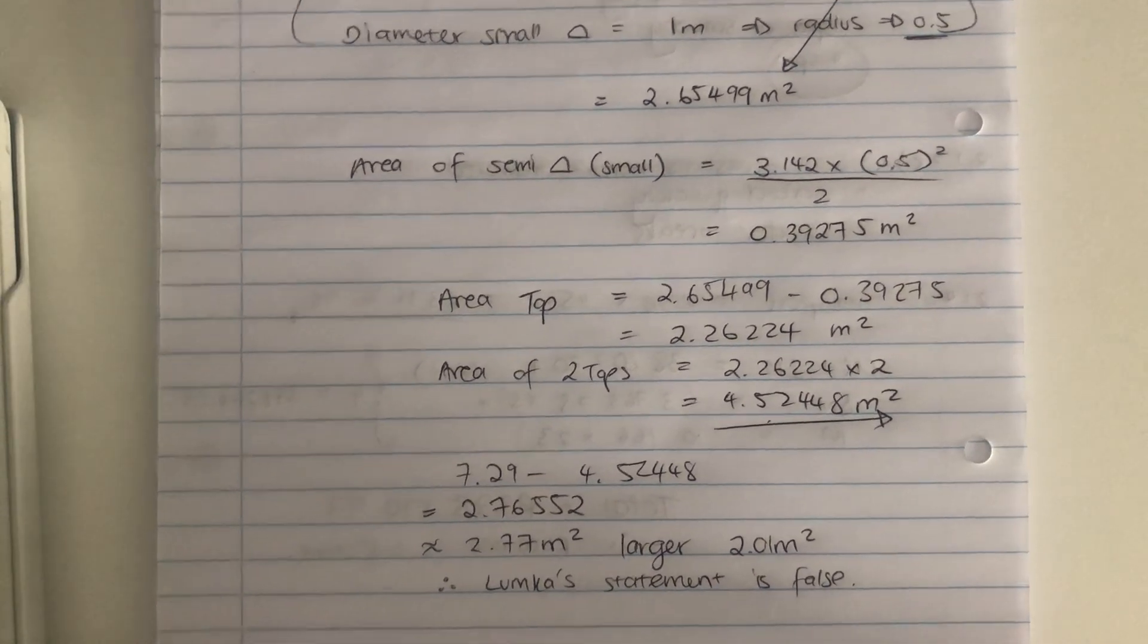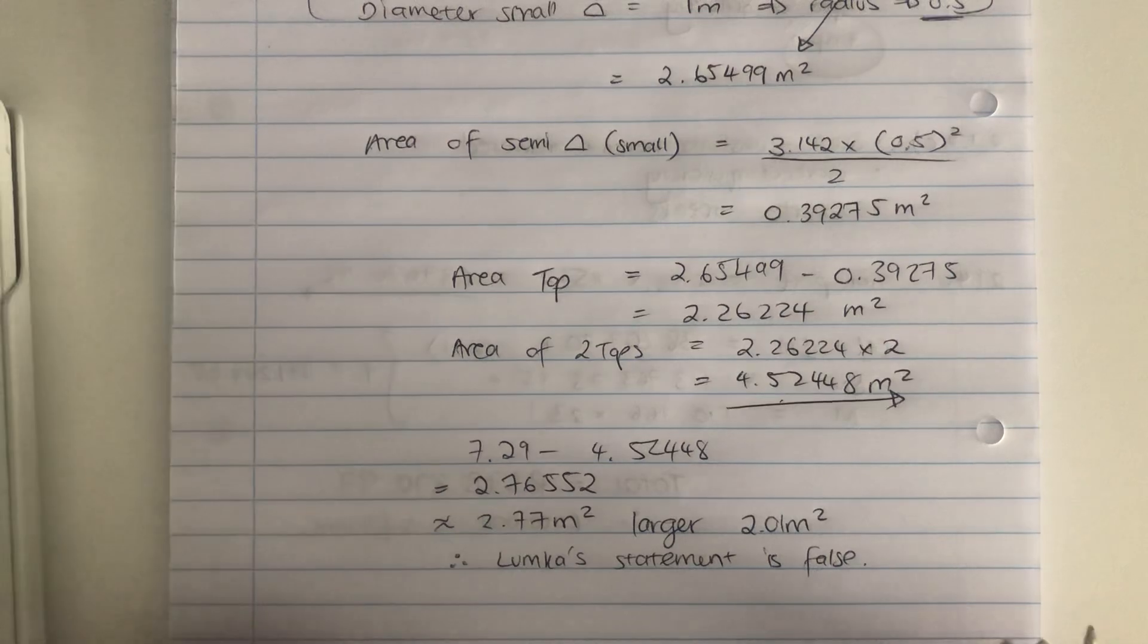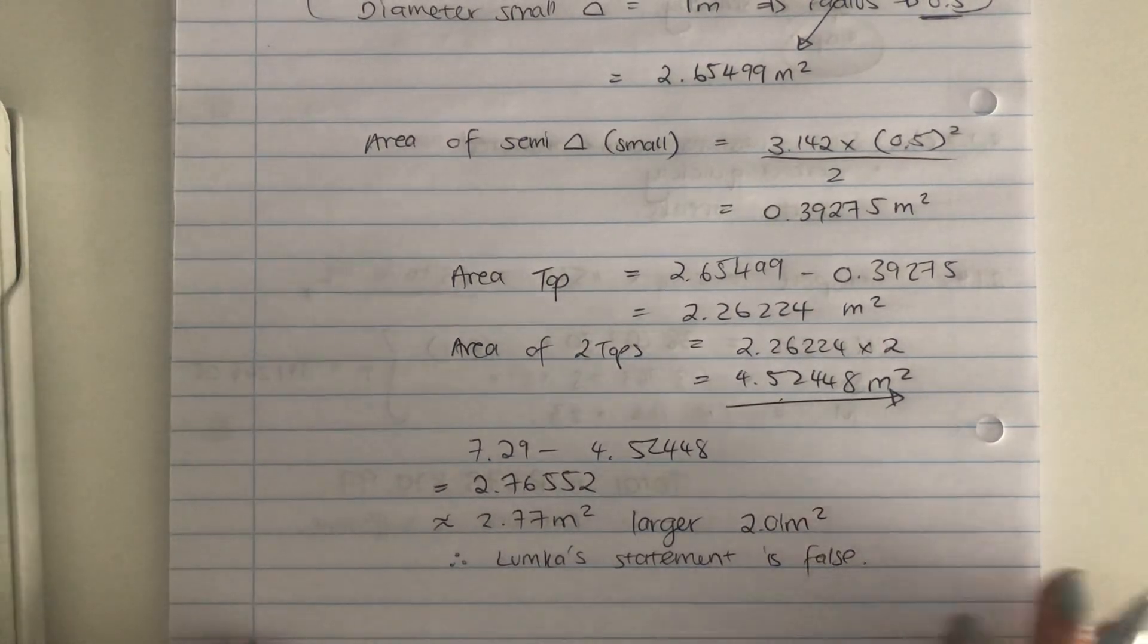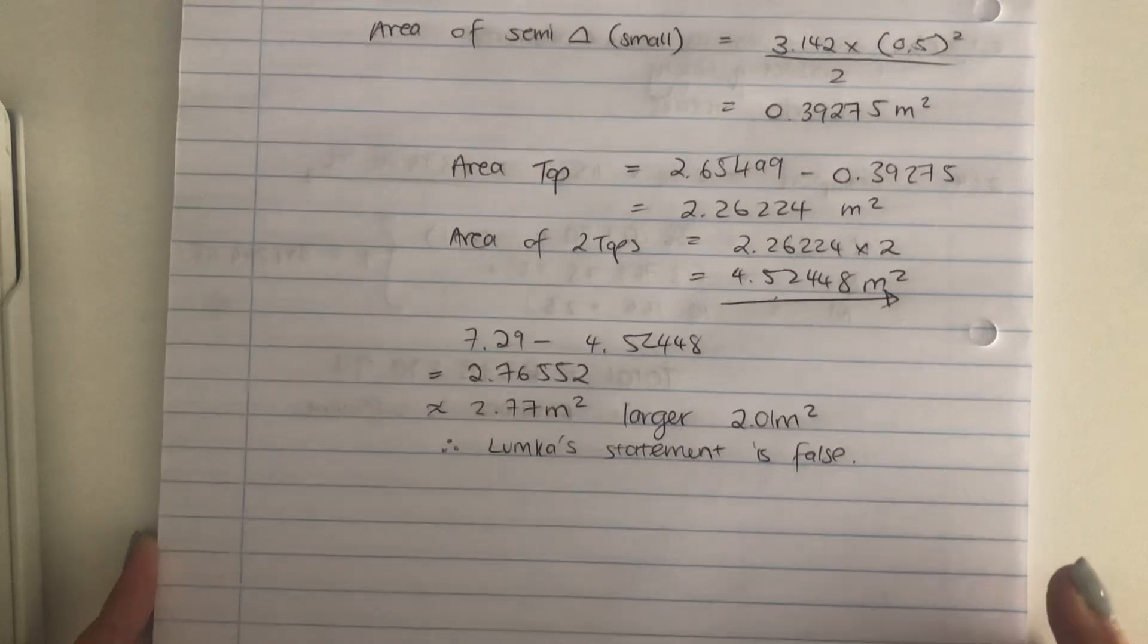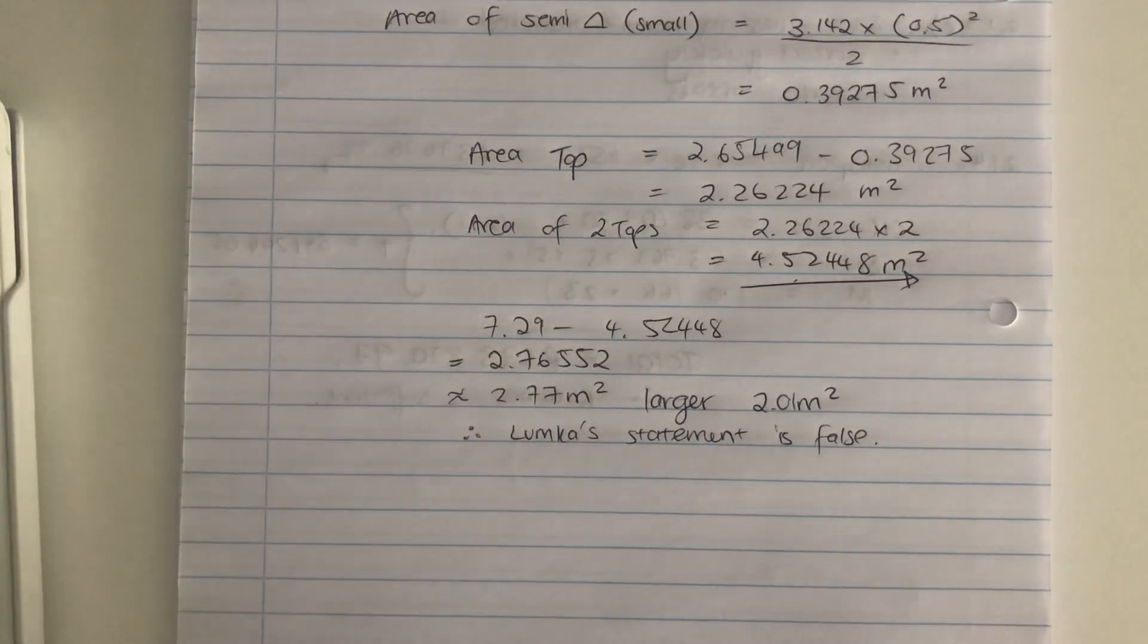So Lumka's wrong. And we have to say that. We say, therefore, Lumka's statement is false or invalid. And then you're done. And please remember, this is eight marks. There's a lot of working out here. You have to write a conclusion, even if all of your working out is absolute perfection. If you don't put a conclusion, you will lose a mark.